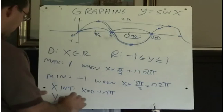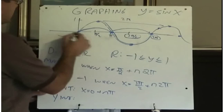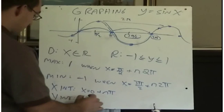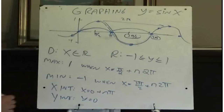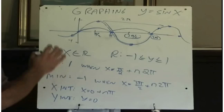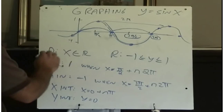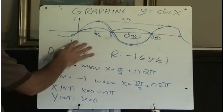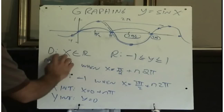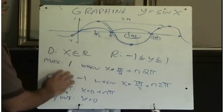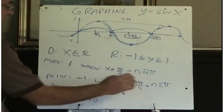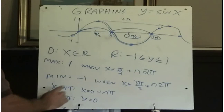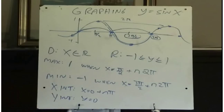And the y-intercept — well, clearly there is only one. The y-intercept is right there at 0. You'll be finished this expectation when you can draw all six graphs and explain what the domain, range, maximum, and minimum values are, for what values of x those occur, and what the x-intercept and y-intercept are.